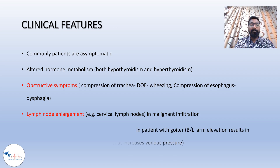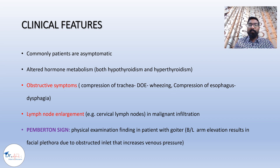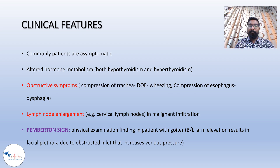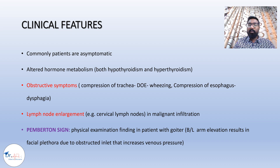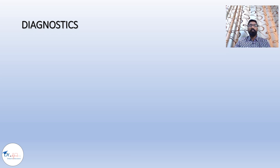There is also lymph node enlargement — enlargement of cervical lymph nodes in case of malignancy or malignant infiltration. An important sign is the Pemberton sign: during physical examination, when the patient elevates both arms bilaterally, this results in facial plethora — redness or erythema of the face — due to obstruction of the venous system and increased venous pressure. This is the most classical feature of patients with goiter.